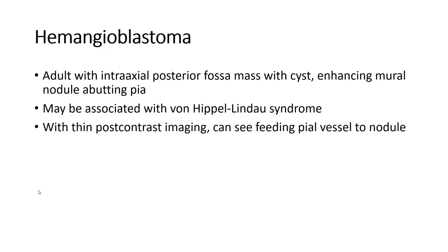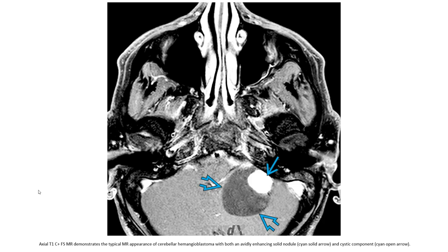Hemangioblastoma is an intra-axial posterior fossa mass with a cyst and enhancing mural nodule. It may be associated with Von Hippel-Lindau syndrome. On thin post-contrast imaging, one can see feeding vessels to the nodule. On axial T1C+, the classic pattern shows both the cyst component and the avidly enhancing solid nodule, indicated by the solid arrow.